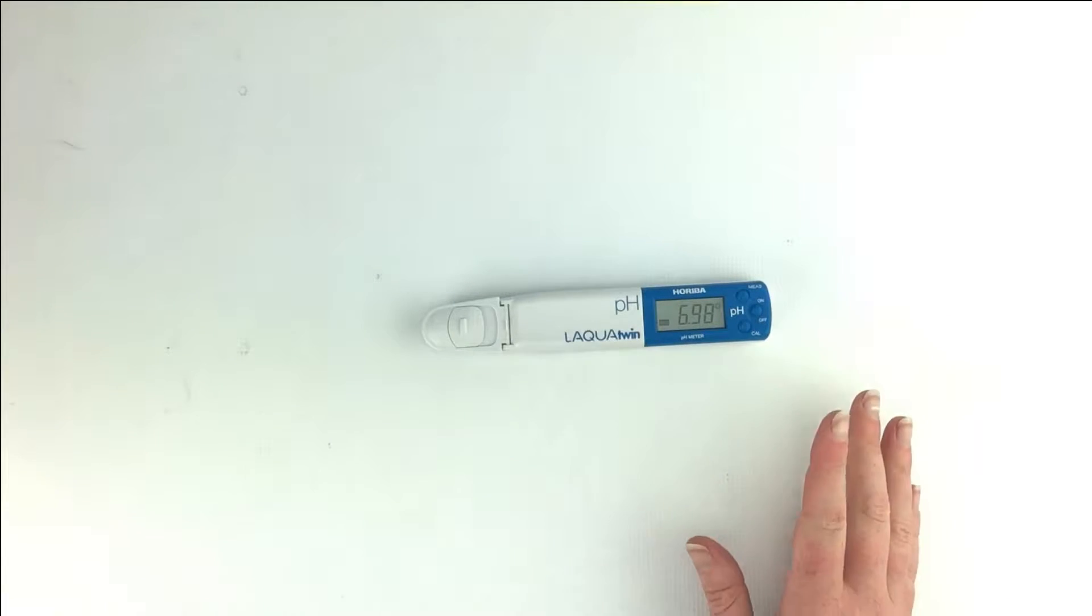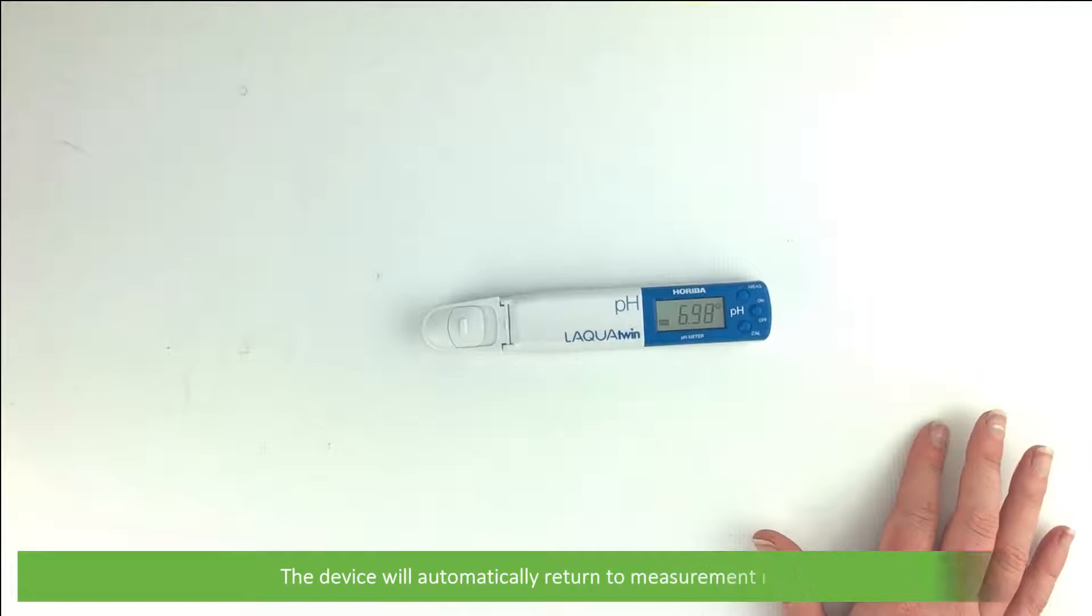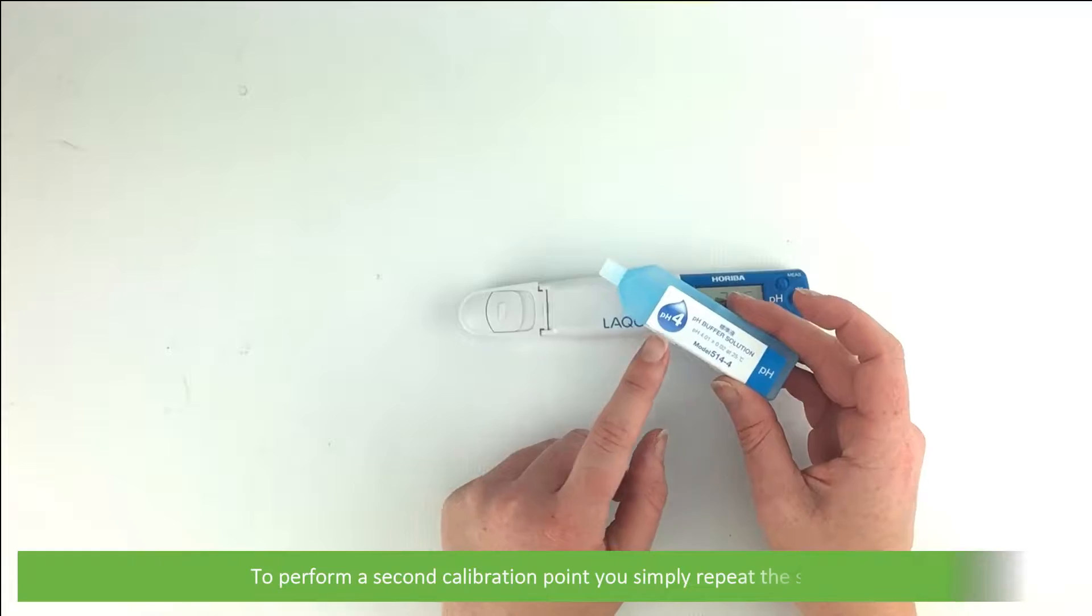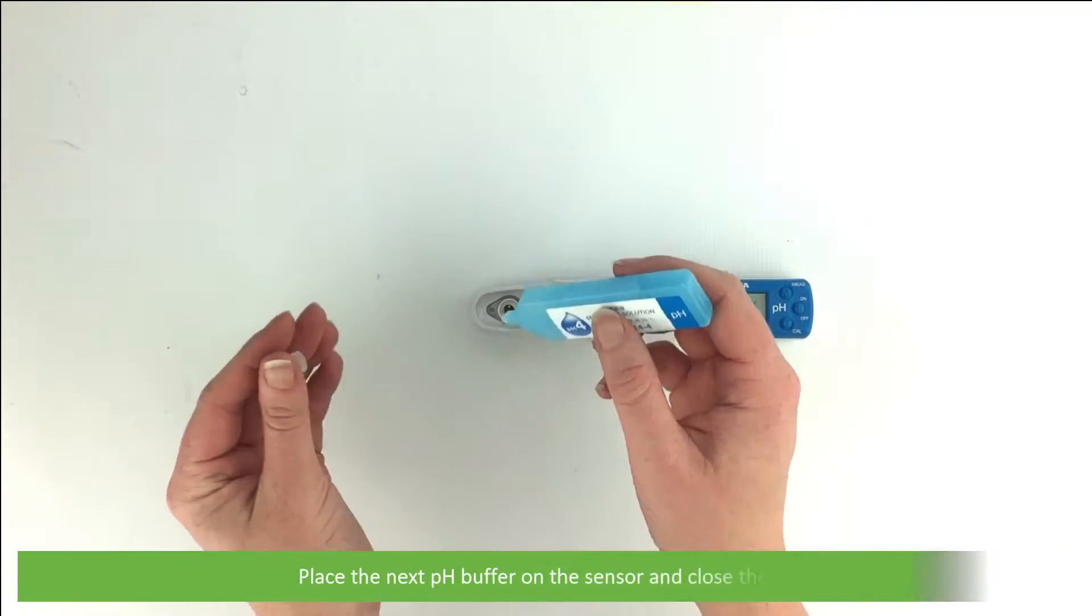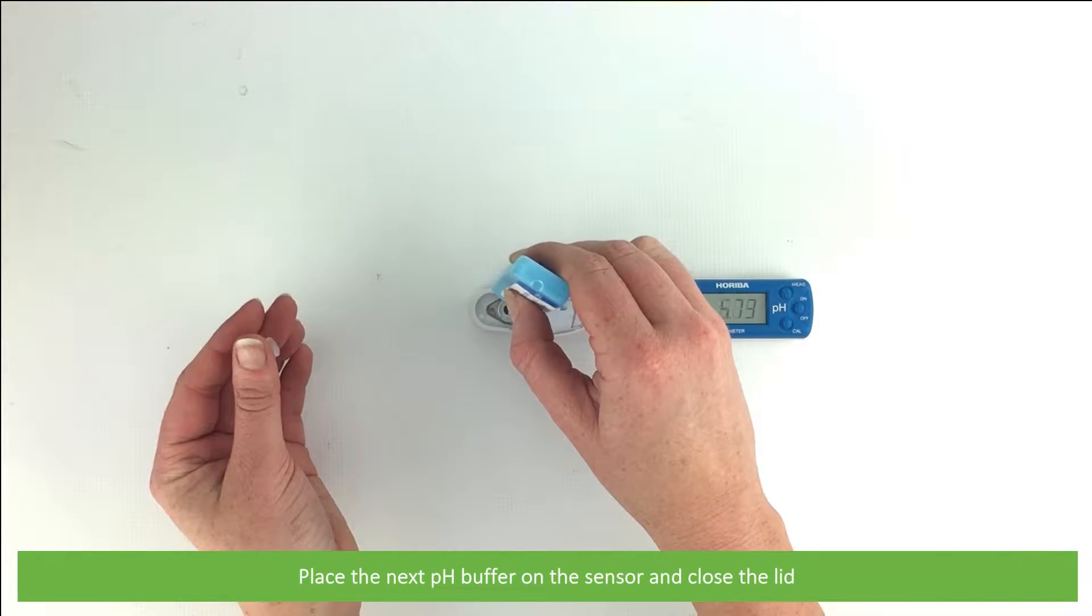Then the device will automatically return to measurement mode. To perform a second calibration point, you simply repeat these steps. Place the next pH buffer on the sensor, then close the lid.